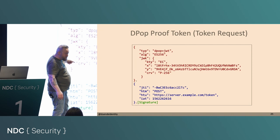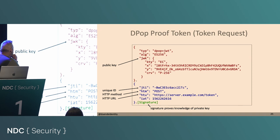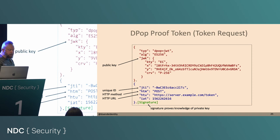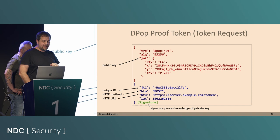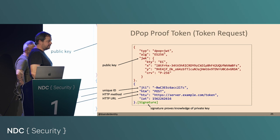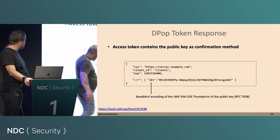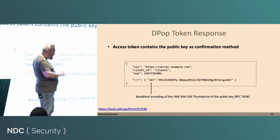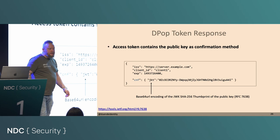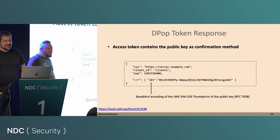This portion is also quite interesting — this is where you have the public key in JWK format. This is what the authorization server uses when it does its calculations. Public key, unique ID, HTTP method, and HTTP URL — all registered in the IANA. The JWK is the public key of the key pair the client generated, and the signature on the proof token proves that the client knows the private key.